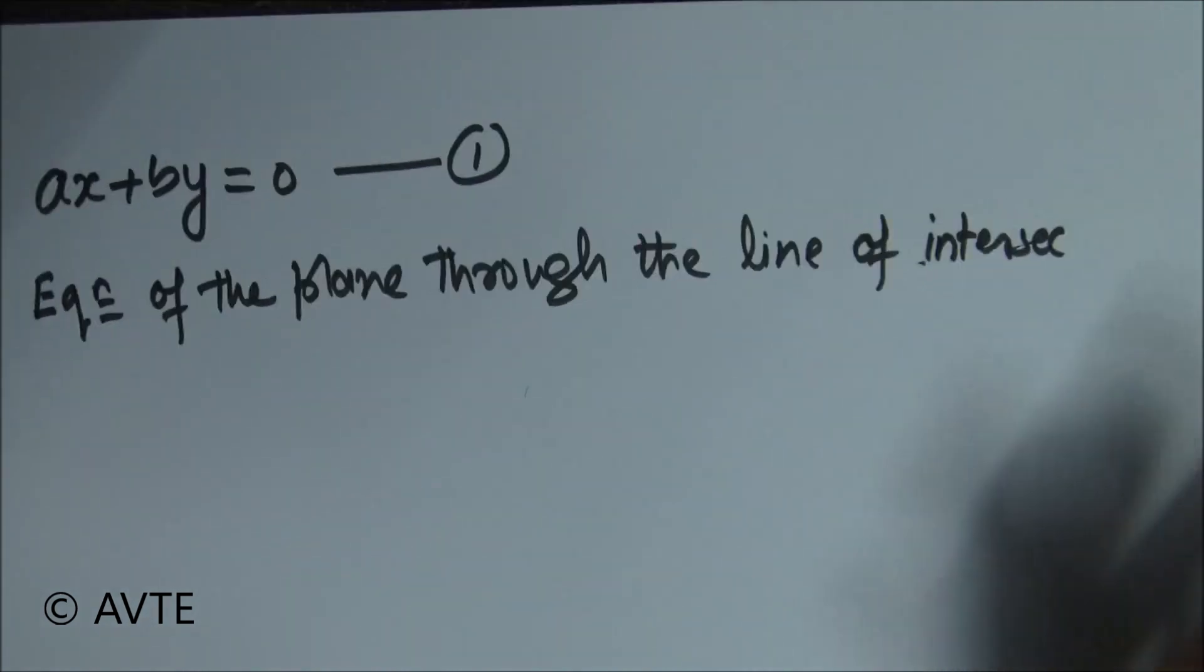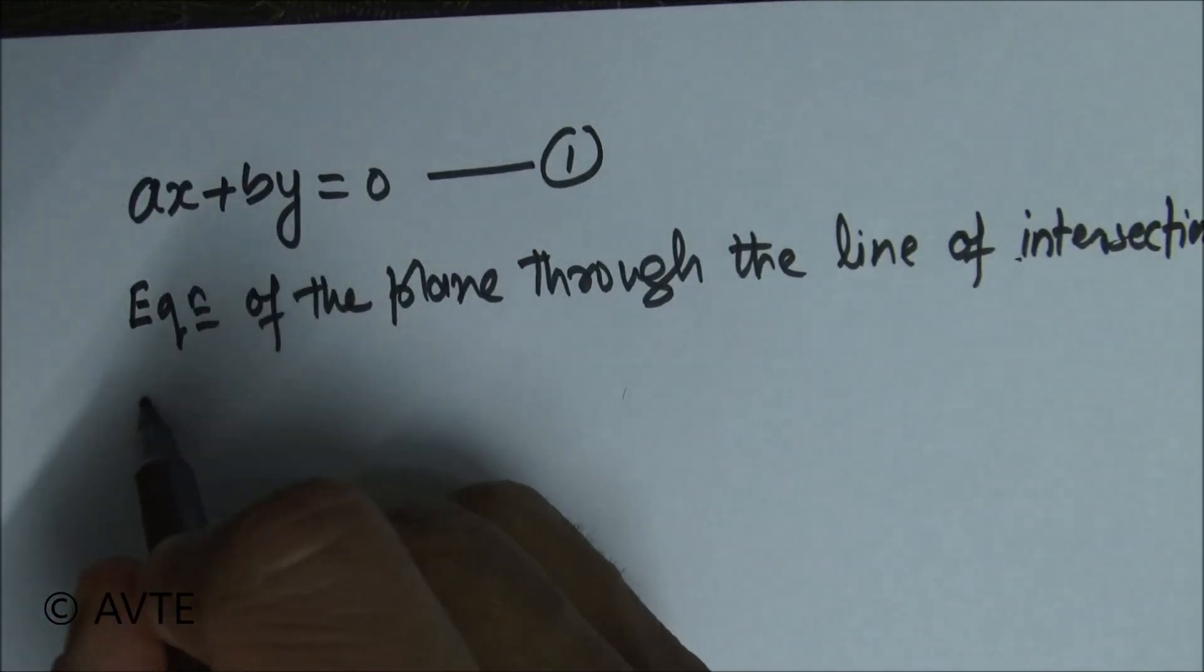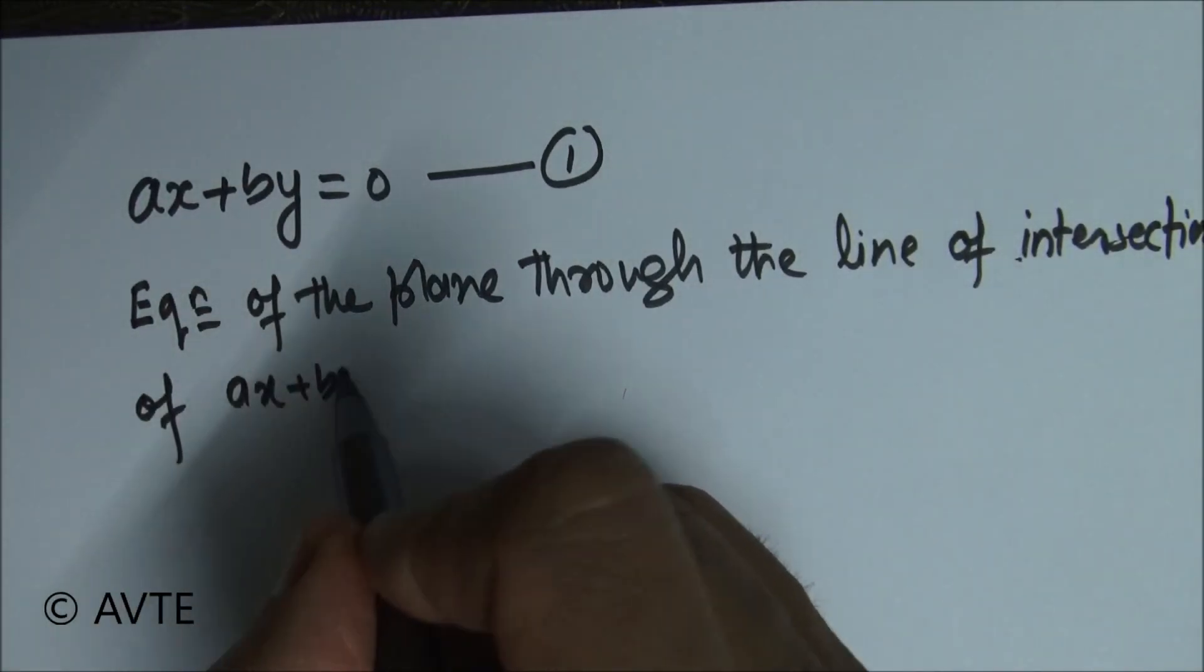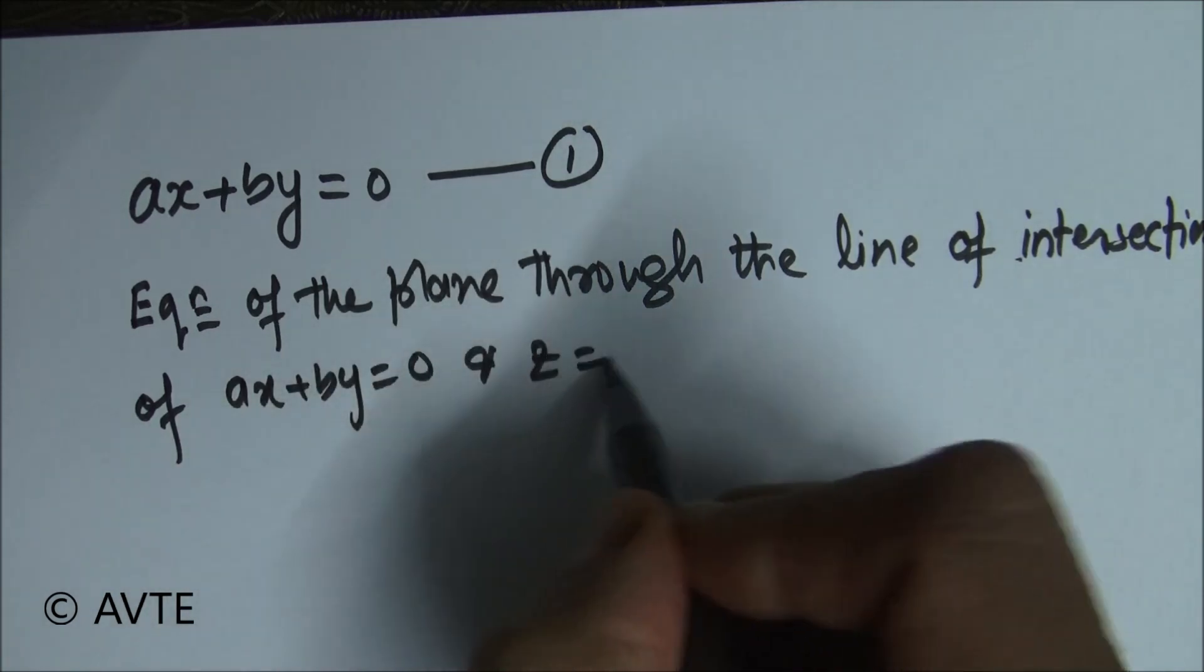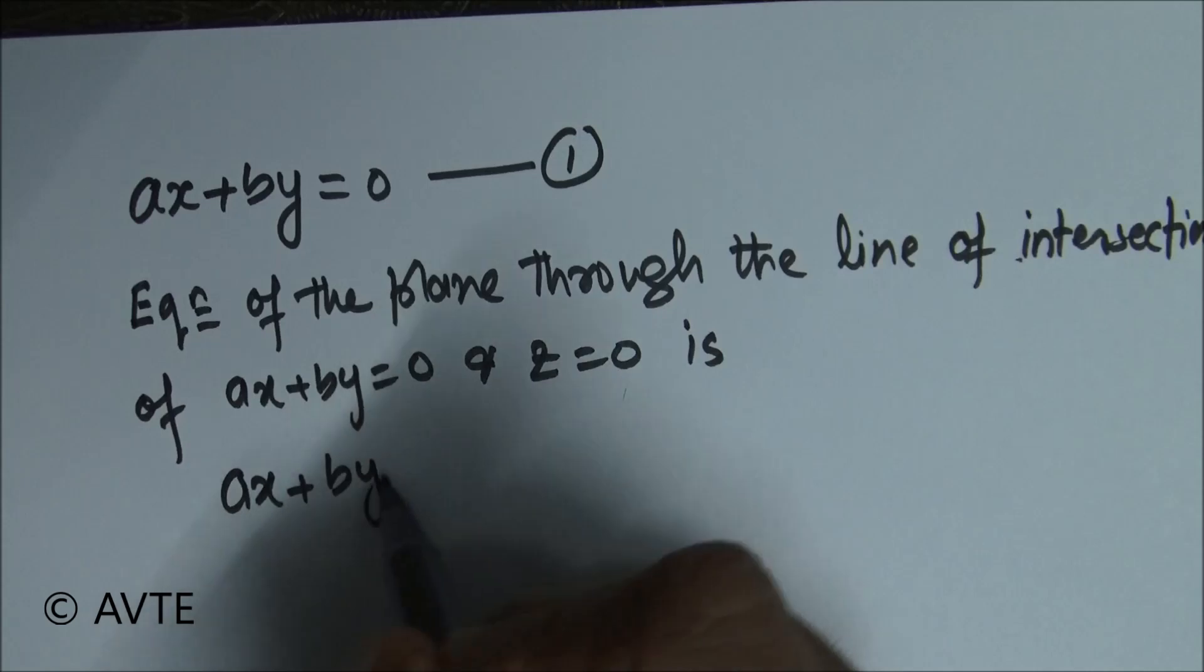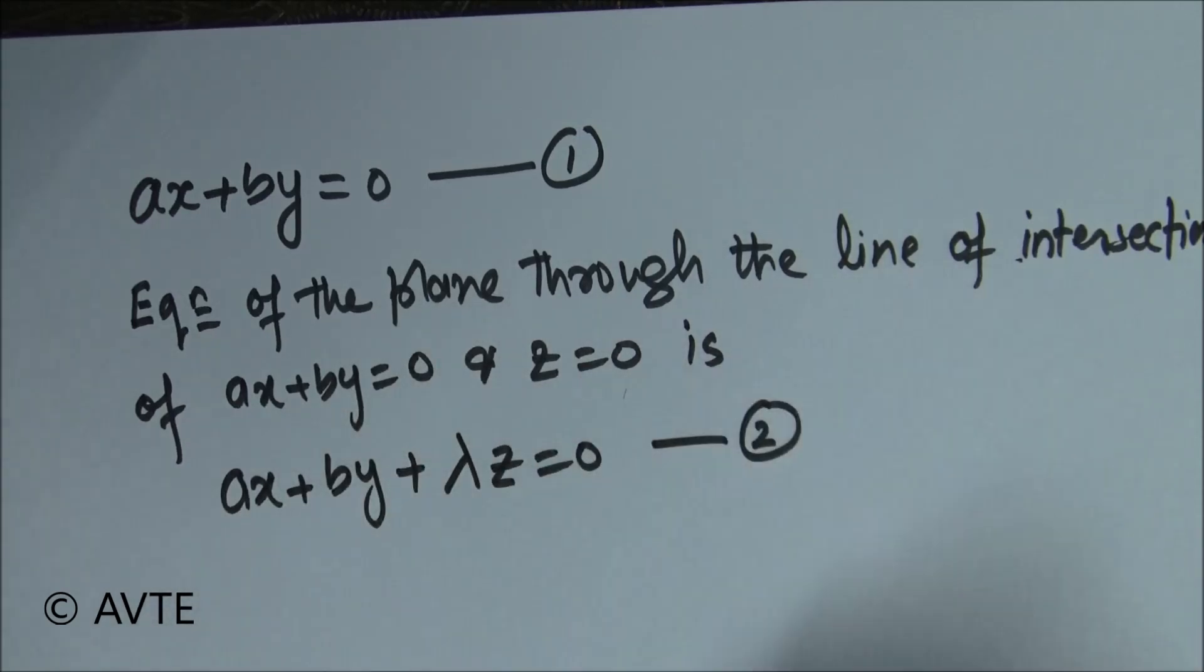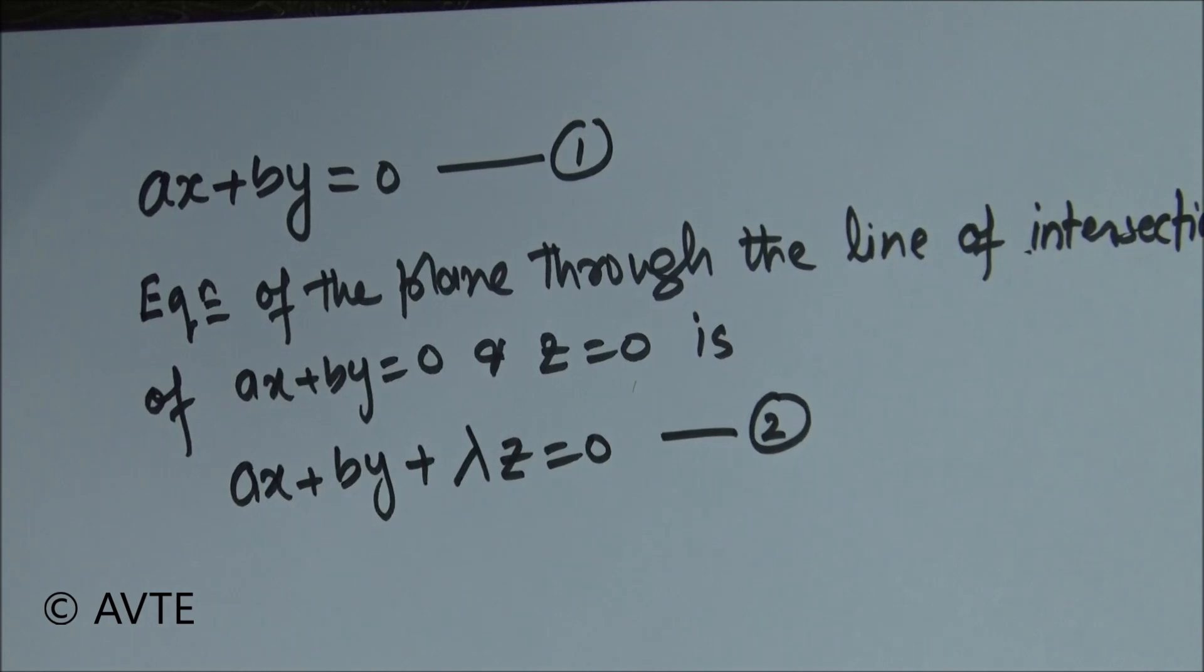AX plus BY plus lambda Z equals 0. Our concern is equation number one and equation number two. Now angle between them is alpha.